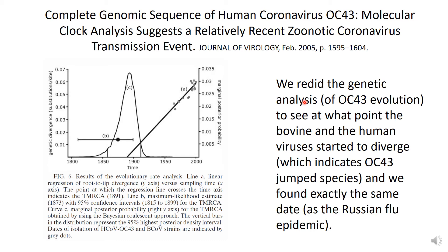As I've mentioned, many coronaviruses jump between animal species into humans, and that's when they can be relatively pathogenic. This is a figure taken from that paper where they redid the genetic analysis of OC43 to see at what point the bovine coronavirus and the human virus started to diverge, which indicates perhaps when this coronavirus jumped species. Interestingly, when they look at the sequences and date it back, the time when it originally diverged occurred around the late 1800s — exactly the time when the Russian flu epidemic happened. So they speculate that it's possible that it was human coronavirus OC43 and not influenza that may have been responsible for the pandemic of 1889.